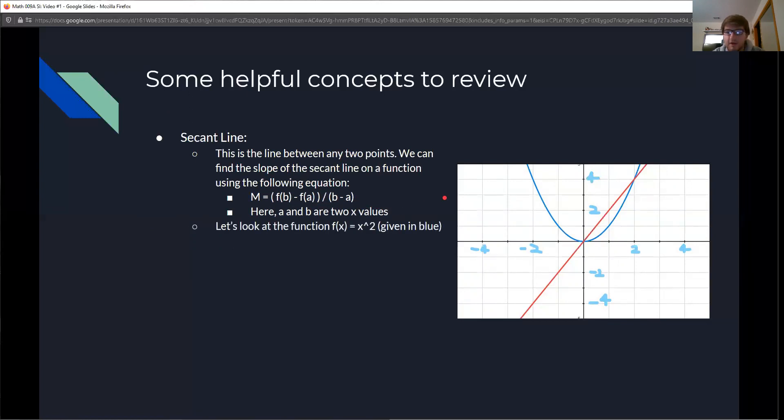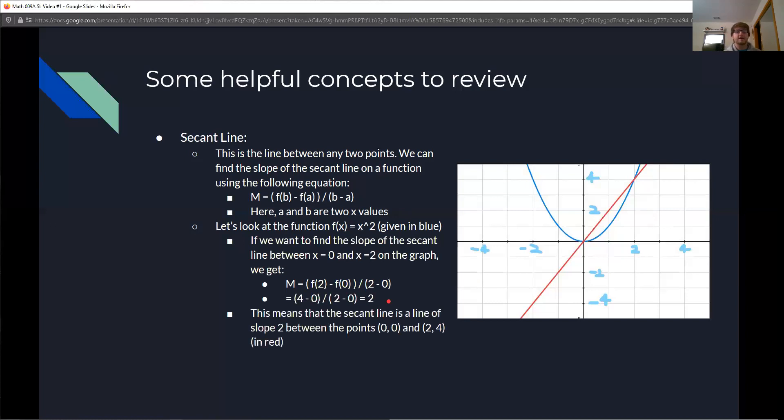Let's look at an example of this. On the right, I have this function here in blue. This is our x squared. If you want to find the slope of the secant line between x equals 0 and x equals 2, then we can just use our equation. So we have m equals f of 2 minus f of 0 over 2 minus 0. We get that this is 4 minus 0 over 2 minus 0, which is just the same as 2. This means that the secant line is a line of slope 2 running between the points 0, 0 and 2, 4. This is what we see here in red.